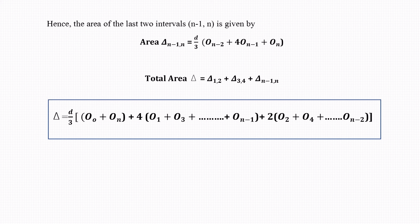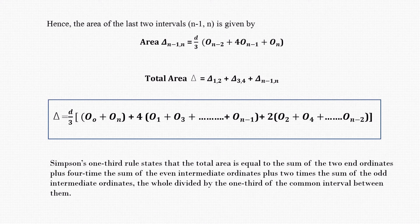Simpson's one-third rule states that the total area equals the sum of the two end coordinates (O0 + On), plus 4 times the sum of the even intermediate coordinates, plus 2 times the sum of the odd intermediate coordinates, the whole multiplied by one-third of the common interval D between them.